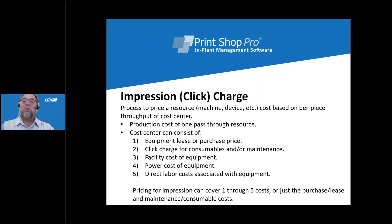The impression charge is the production cost of one pass through a resource, best used to price a resource that has a per piece throughput such as a digital toner press, wide format, folder, or saddle stitcher. The cost center for the impression cost consists of equipment lease or purchase price, the click charge for consumables and maintenance, facility cost, power cost, and direct labor costs associated with the equipment. The terminal outputs for the impression charge are either all inclusive or equipment maintenance only. The all inclusive calculation allows for the addition of a percentage markup for overhead or to recover other expenses, or simply as a buffer to cover variability of demand.